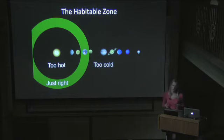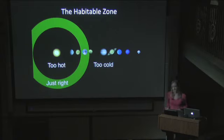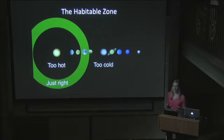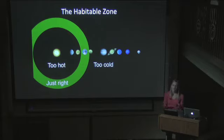The habitable zone is the distance from the star at which you could have liquid water on the surface of the planet. Anything inside that zone, like Mercury and Venus, would be too hot. Anything outside, like Mars and Jupiter, would be too cold. In our solar system, this ring falls between the edges of Venus and Mars. Depending on which models you use for how planets respond to different amounts of sunlight, you might push the outer edge a bit past Mars or inward past Venus, but it's definitely going to encompass the Earth's orbit.